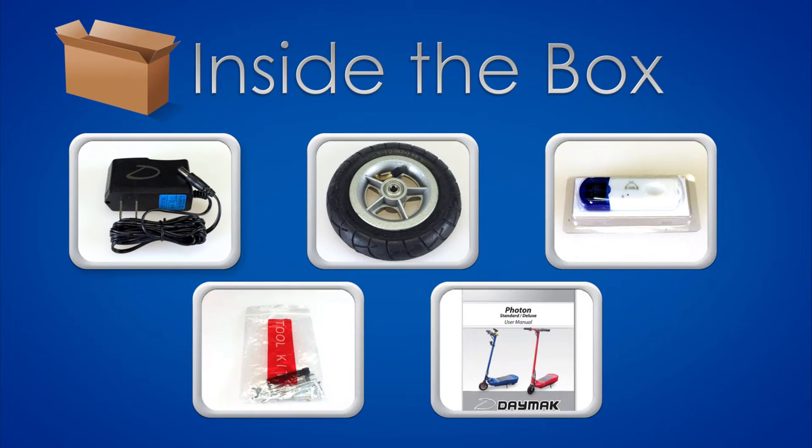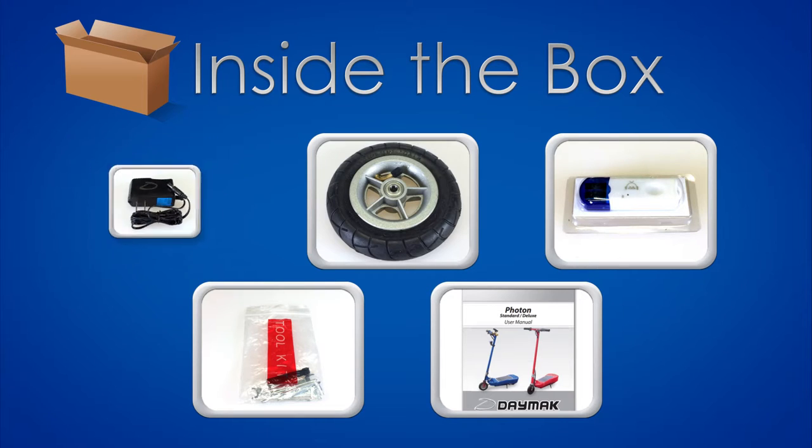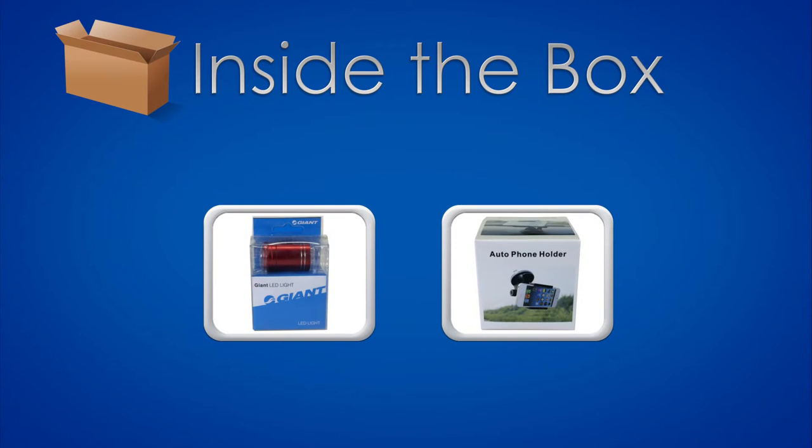Inside the box you will find the following: charger, front tire, bluetooth dongle, tool kit, manual, front light, and phone holder.